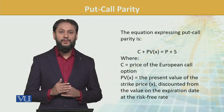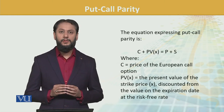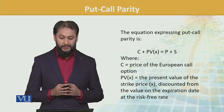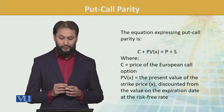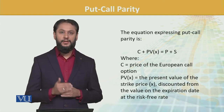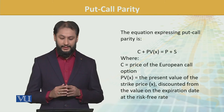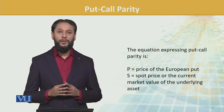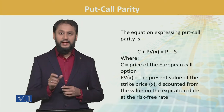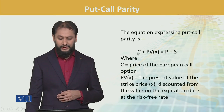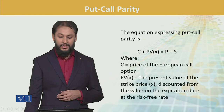The formula is: C plus the present value of the strike price equals P plus S. Here, C is the call option, the present value of the strike price is discounted from the expiration date at the risk-free rate, P is your put option, and S is the spot price. This relationship is very important to understand.